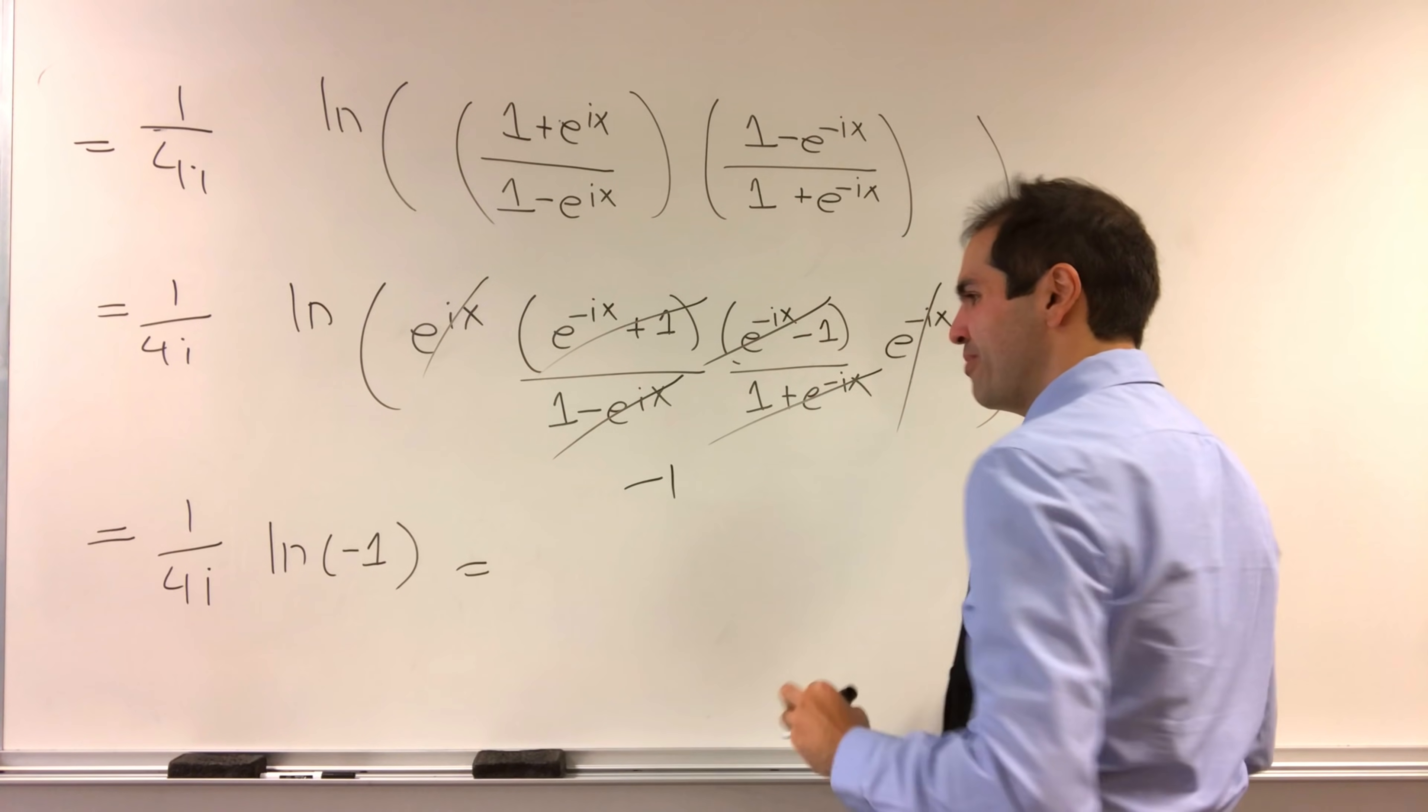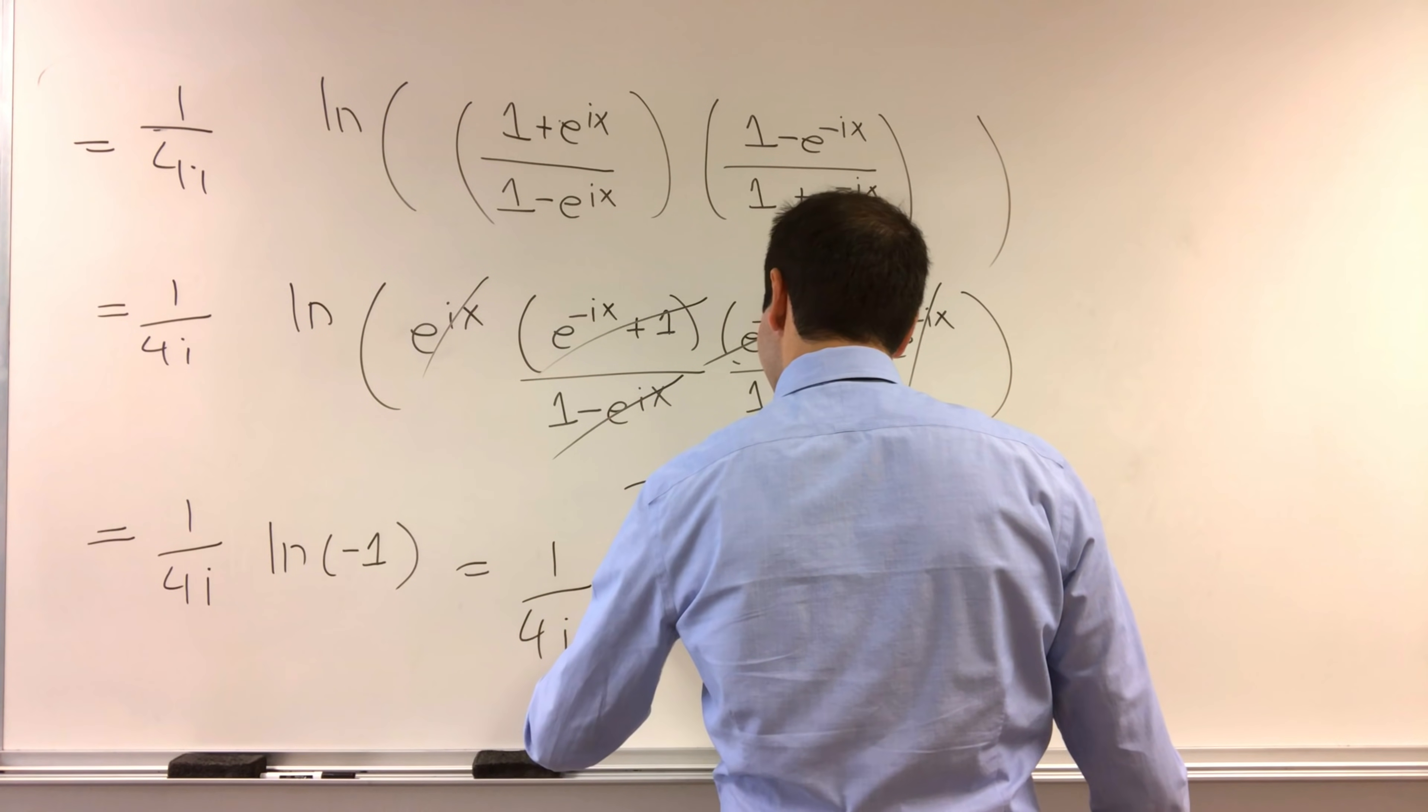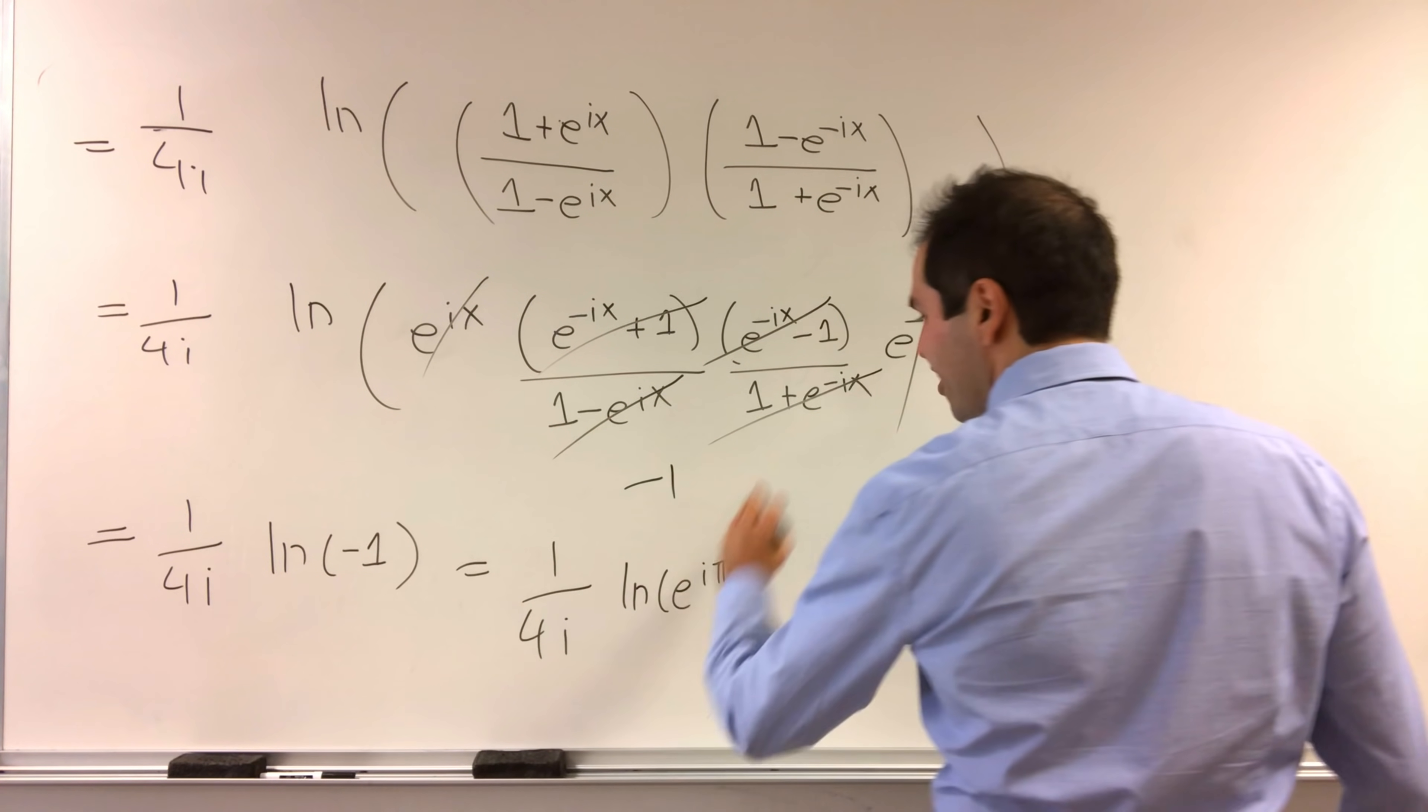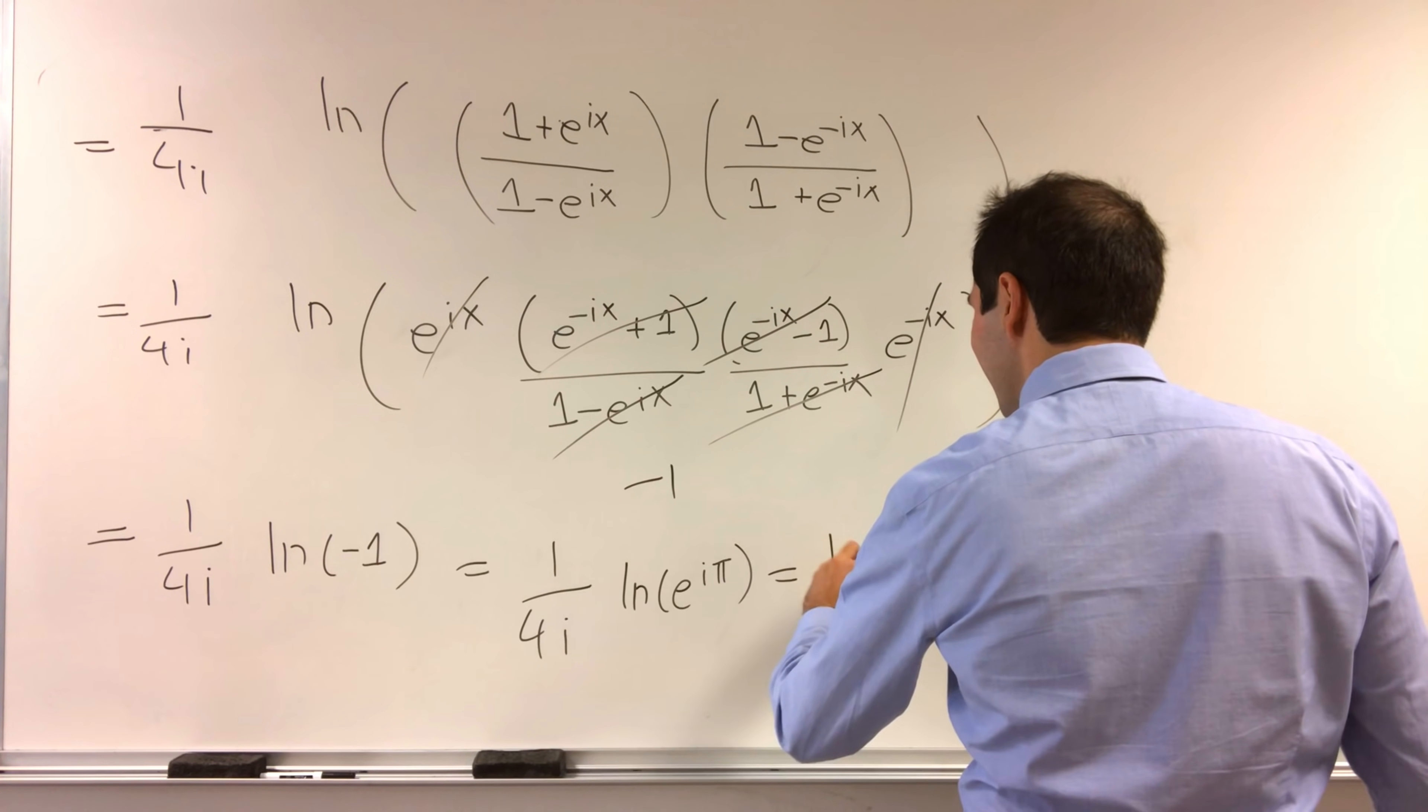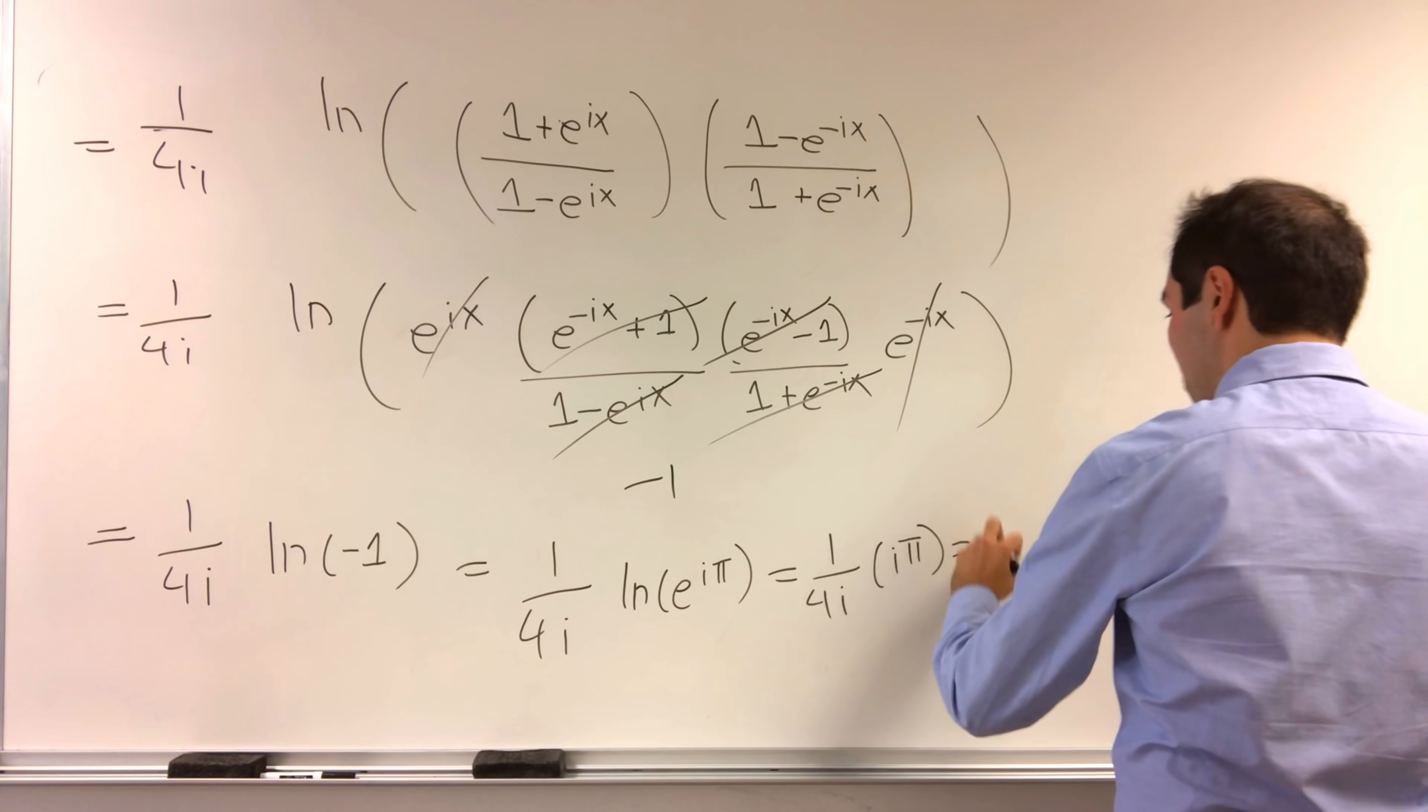I think you have to use principal logs or otherwise it's wrong. So you get 1 over 4i. This is ln of e to the i pi. Okay. And then ln of e is just the identity. So 1 over 4i times i pi. And that's pi over 4.